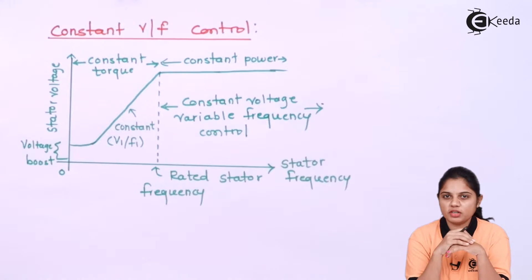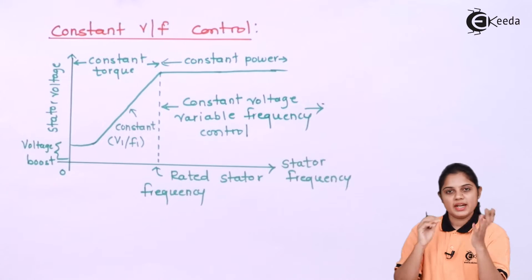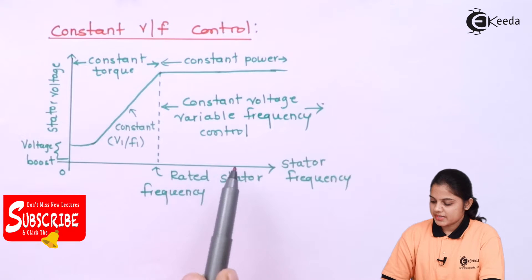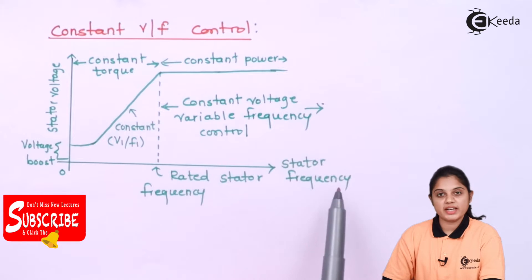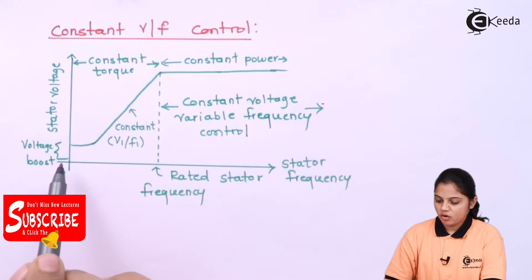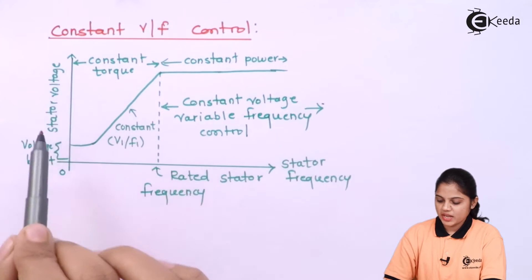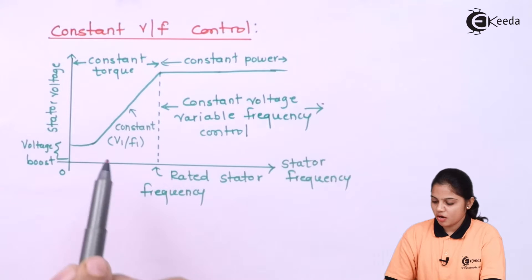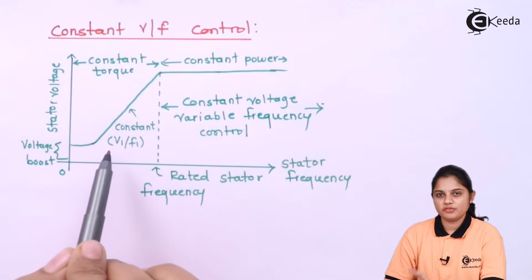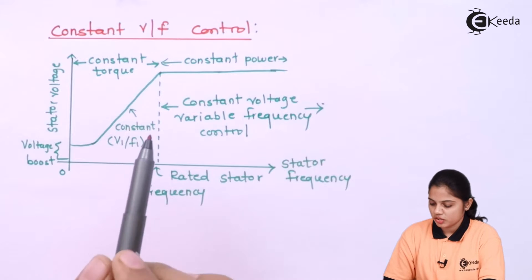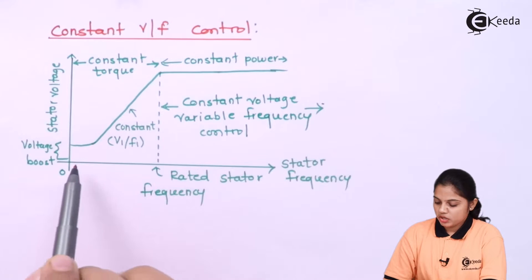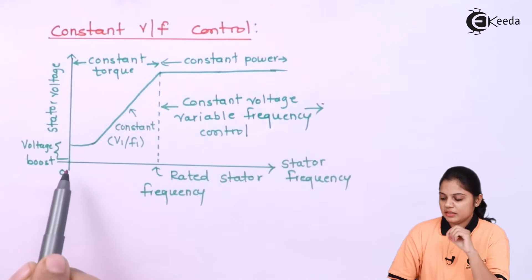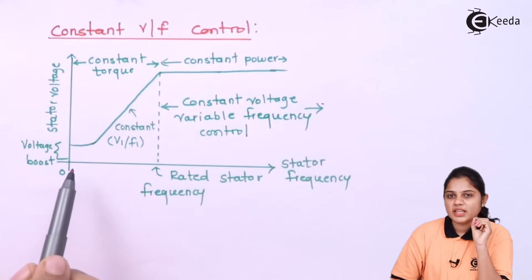Here I have drawn a graph. On the X-axis we have stator frequency, and on the Y-axis we have stator voltage. We are going to see how this voltage and frequency will manage the speed of the motor.